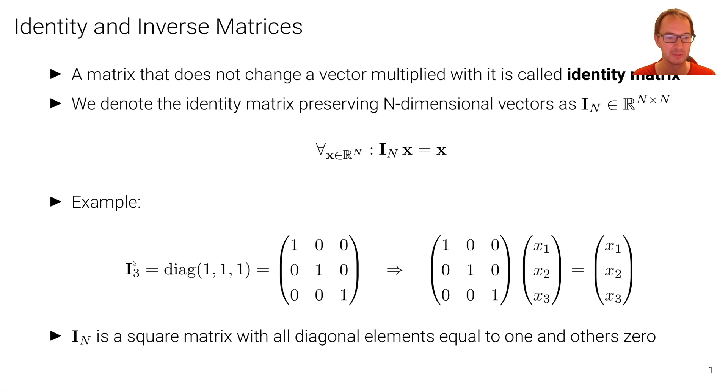So for example, if we look at the three dimensional vector space, then this would be the corresponding identity matrix. And we can also write this because this is a diagonal matrix. We can write it as this expression. This is a diagonal matrix where the first element is one, the second element on the diagonal is one, and the third element on the diagonal is also one.